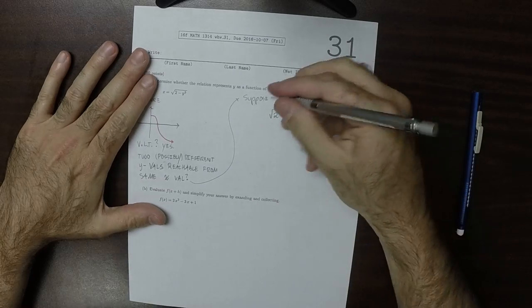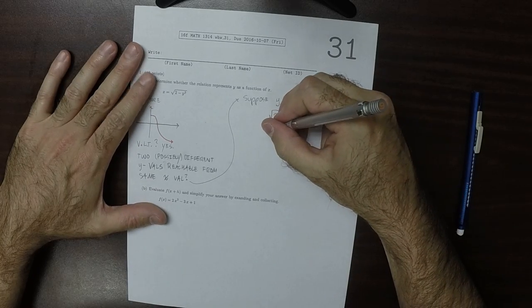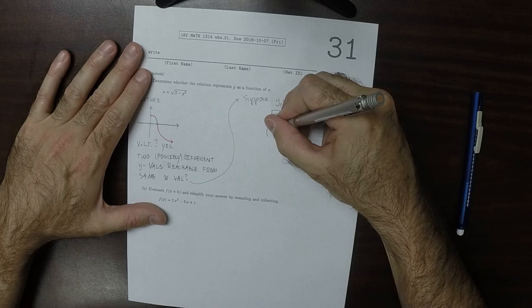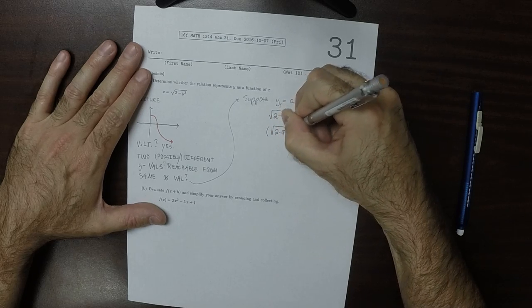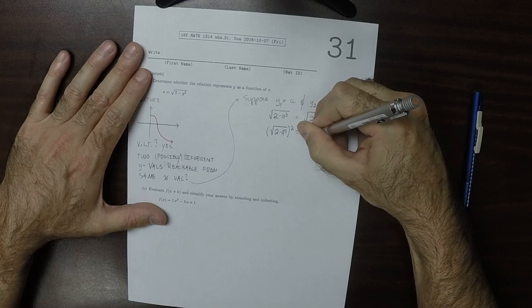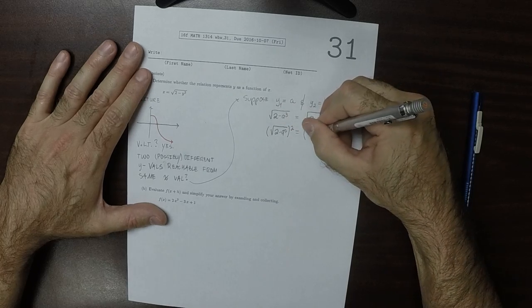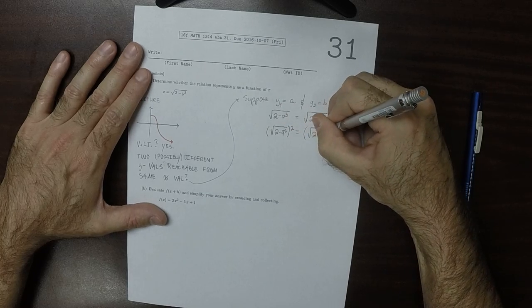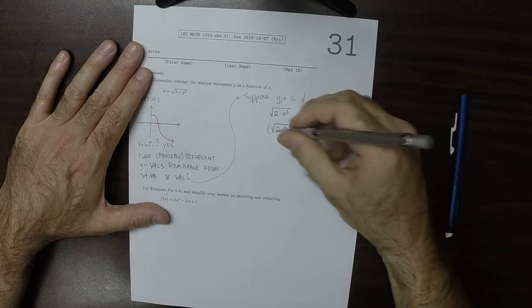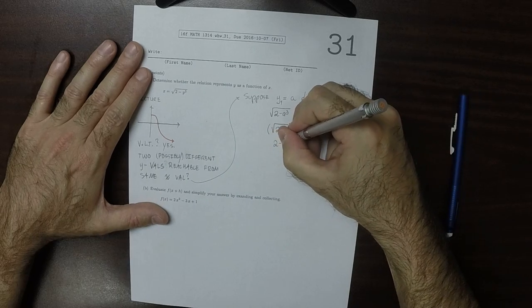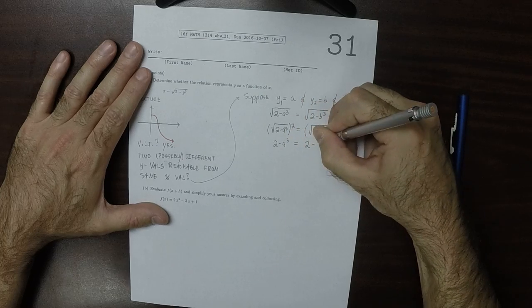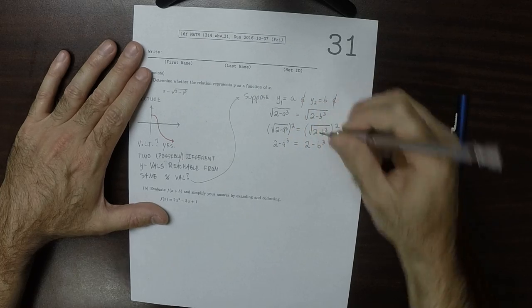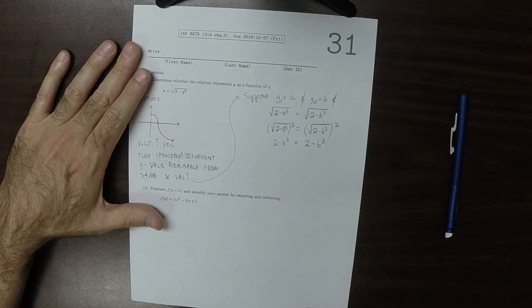So, if we square both sides, square both sides, that would be 2 minus a cubed squared, square root squared, is the square root of 2 minus b cubed squared. That would be 2 minus a cubed is 2 minus b cubed because the square and the square root cancel.